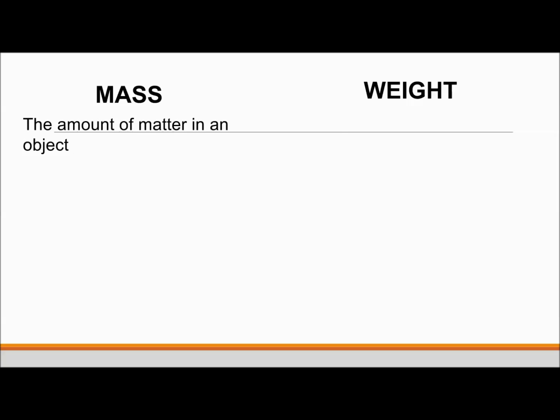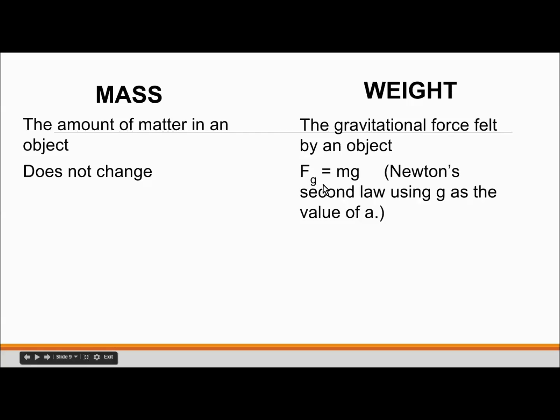Mass is the amount of matter in an object. Weight is the gravitational force felt by an object. So the amount of matter in an object will not change. But the gravitational force will change. And gravitational force, we write as F sub G. This is weight. F sub G is the same as weight. We can use Newton's second law, which says force is mass times acceleration, to calculate a value for weight. Because force of gravity equals mass times the acceleration of gravity, which is G. So the force of gravity or the weight of an object does change, depending on the gravitational acceleration.